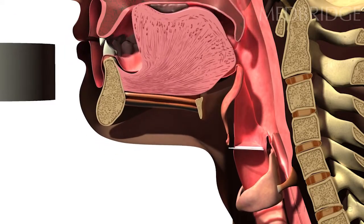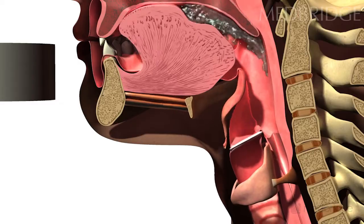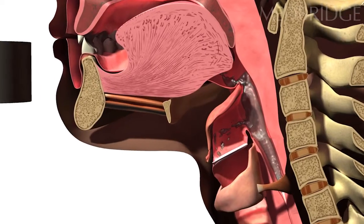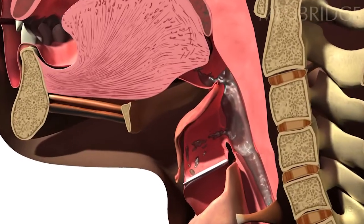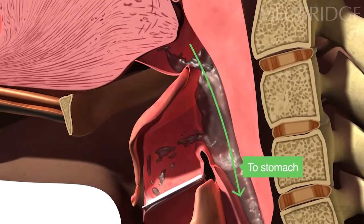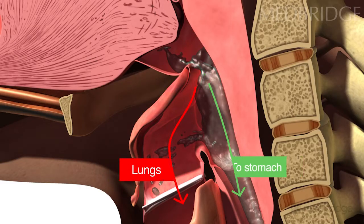When aspiration occurs during swallowing, we see that the epiglottis has not closed completely to protect the airway. While most of the liquid may be directed toward the esophagus, the fluid that traveled into the windpipe might trickle through the vocal folds and down to the lungs.